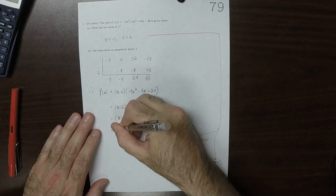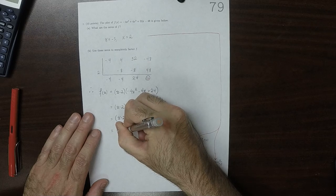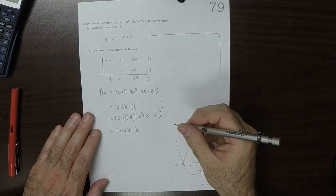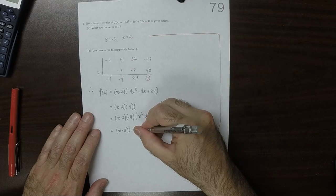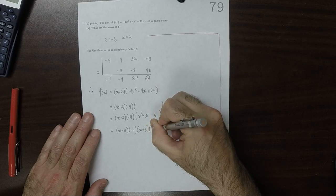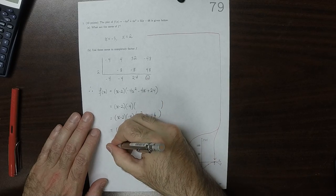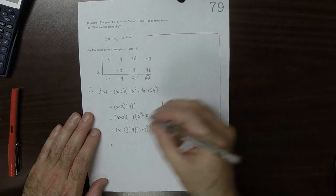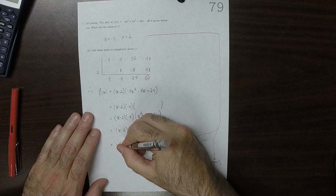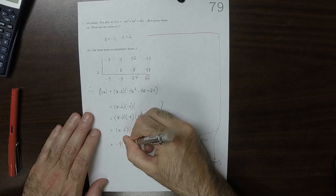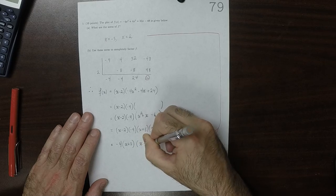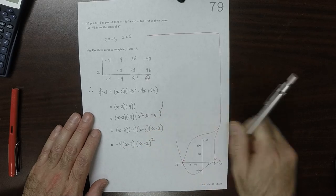So that'd be (x - 2) multiplied by -4 multiplied by (x + 3)(x - 2). Collecting all these together: -4(x + 3)(x - 2)².